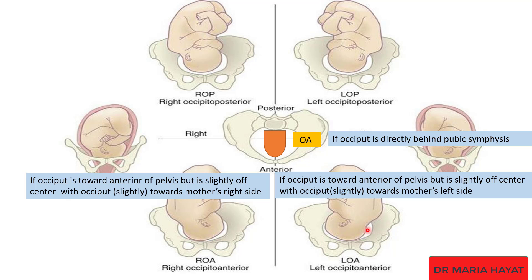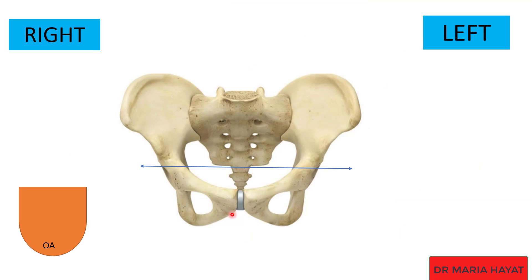So the normal fetal positions are: direct occiput anterior, right occiput anterior, and left occiput anterior. If in an OSCE station the examiner asks you the normal fetal positions, you should know these three. Other than these, all other fetal positions are abnormal.